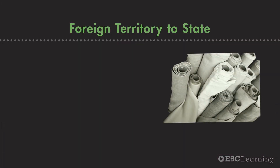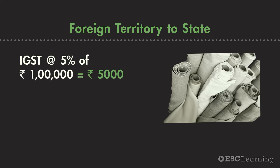Let us take another scenario. In this scenario, goods are transferred from one state to another state, or from one state to a Union Territory. In this case, IGST — equal to CGST plus SGST — will be applicable. Thus, if a dealer in Uttar Pradesh sells goods worth Rs. 1 lakh to a shopkeeper in Madhya Pradesh, then assuming a GST rate of 5%, IGST of Rs. 5000 will be applicable.